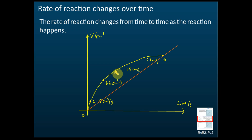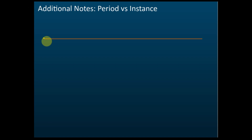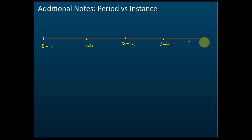Now we're going to learn how to find the instantaneous rate. The instantaneous rate is the rate at an instant. In the next slide I'll discuss the difference between a period and an instant. Let's say a reaction runs for four minutes. We start at zero minutes, then one minute, two minutes, three minutes, and four minutes.